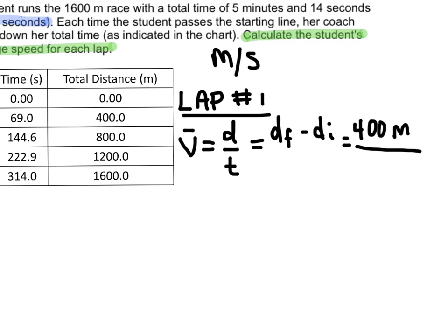And the total time, we could say the same thing here, where it's the final time minus the initial time. And it's again going to be 69.0 seconds minus 0, so we could just say 69.0 seconds.